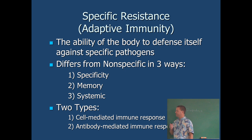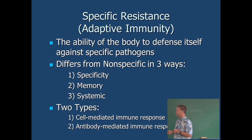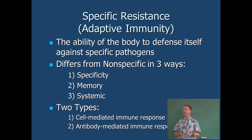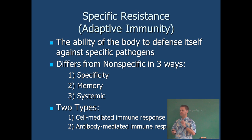Specific resistance differs from nonspecific resistance in three ways. First, it is specific to the pathogen — these are the Navy SEALs of immune cells, targeting only one bad guy. Second, they have immunological memory: once they encounter a pathogen, they store that memory and deal with it better the second time, because memory cells can last for years or even a lifetime. For example, chickenpox is a disease you tend to only get once. Third, the specific defense is systemic — it operates all over the body because of our B and T cells.